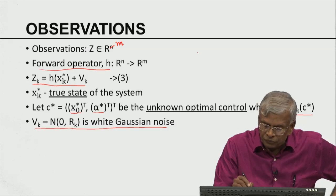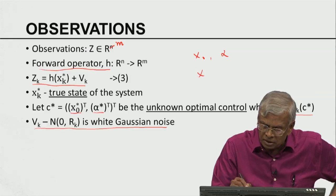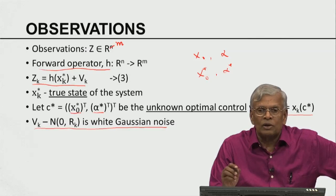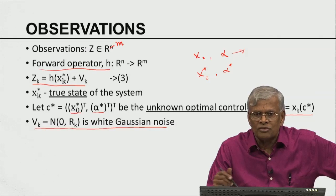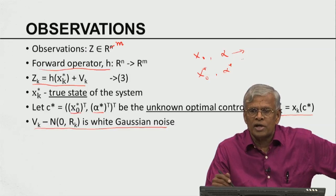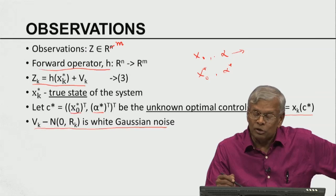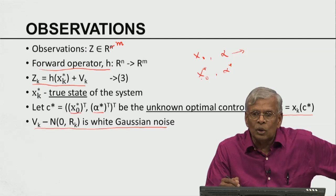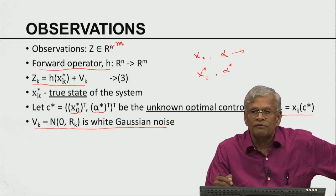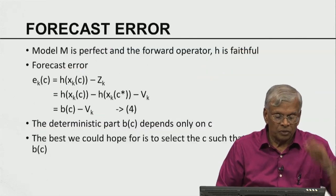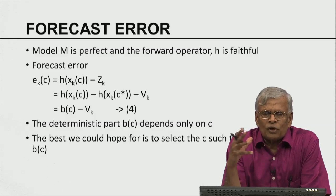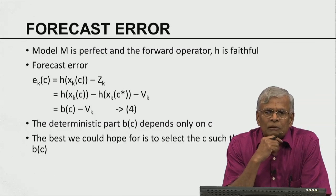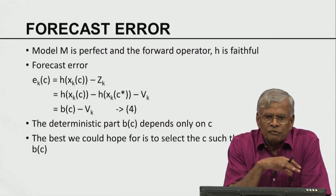Mother nature has picked x_k* and alpha*. If our chosen x_0 is not equal to x_0*, or alpha is not equal to alpha*, the solution will have forecast errors. Once we know the forecast errors, our job is to alter the control — move x_0 closer to x_0* and alpha closer to alpha*. That is the basic idea. It is useful to think about a classification of forecast errors, which we alluded to in module 1, but it is worth repeating some of the principles here.